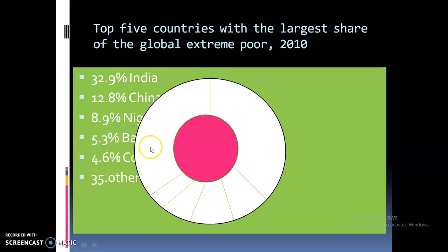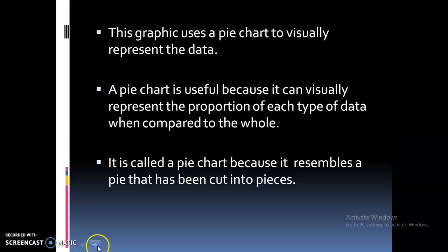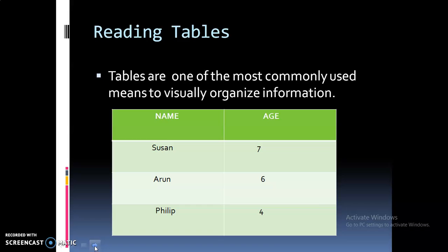This is what we learn from this graphic chart. Next, how to read tables. Tables are one of the most commonly used means to visually organize information. A table consists of a number of horizontal rows and vertical columns in which the information to be read is provided. Here is a very simple table with two columns and three rows.